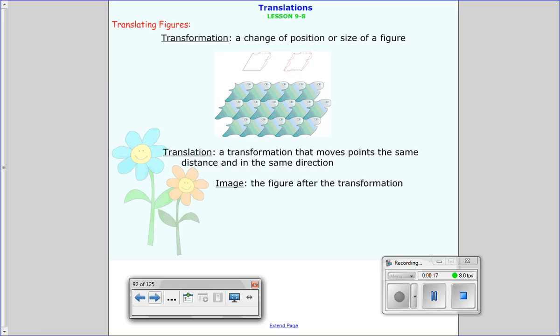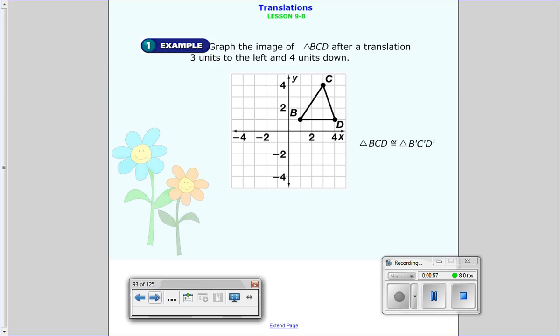When we can change a figure by its position or its size we call that a transformation because something has changed with it. One type of transformation is a translation, and when we translate something we're just moving it in a different direction but moving the same amount of points. For example, up here is a form of a translation because this little figure like a fish keeps getting moved over. When you move a figure or make the change, we call that changed part an image, the image of the original. So we're going to get started.